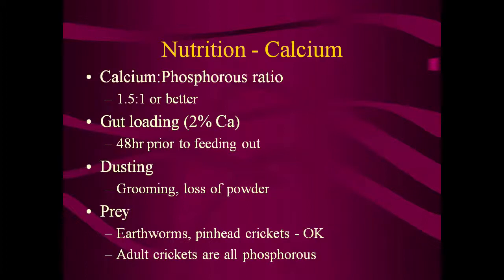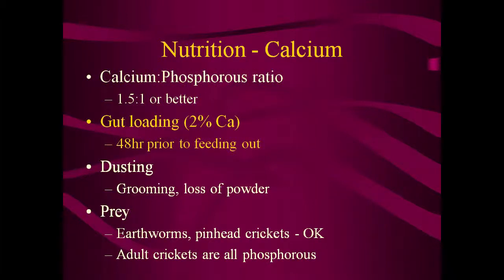One of the most important nutrients to consider in amphibians is calcium. The calcium-phosphorus ratio should be 1.5 to 1 or better. Many commercially raised invertebrates are low in calcium and high in phosphorus. One procedure for correcting this imbalance is gut loading, done by feeding the invertebrate a high-calcium diet prior to feeding it to the amphibian. The goal is to raise the calcium content of the diet to up to 2% on a dry matter basis, and so correct what would be an inverted calcium-phosphorus ratio in untreated invertebrates.